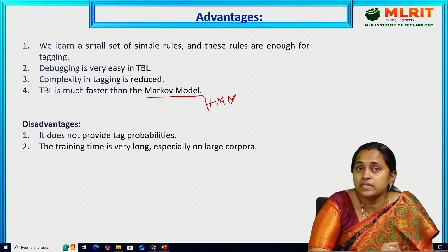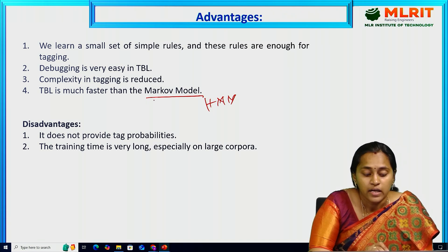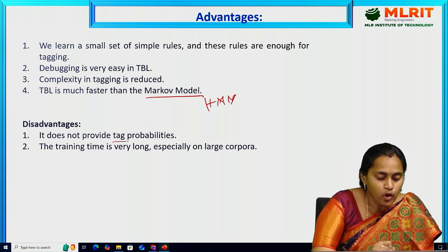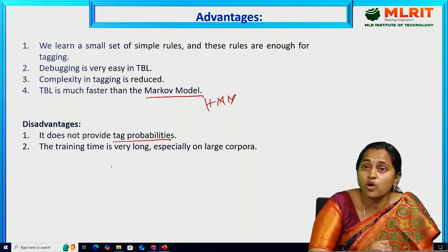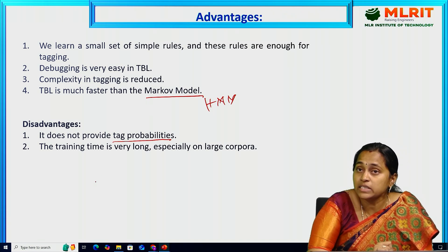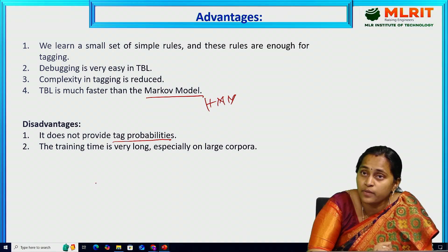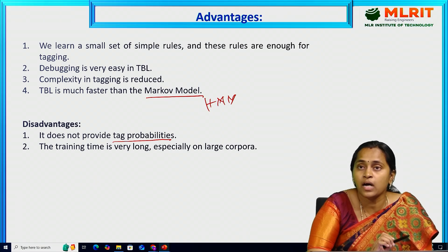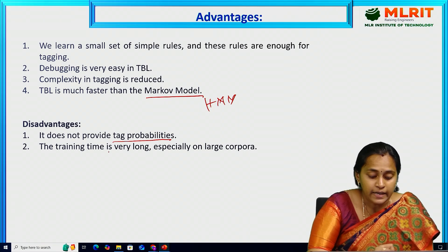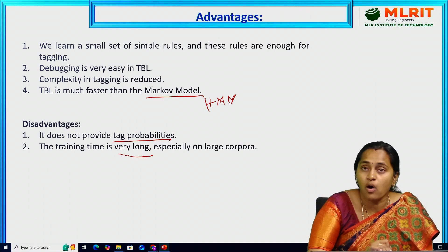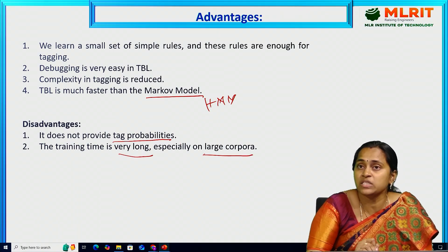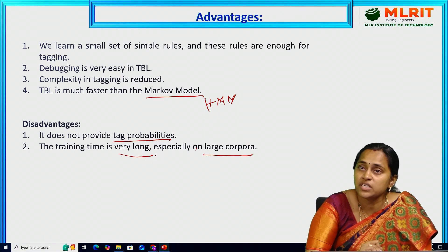The disadvantages: TBL does not provide tag probabilities, whereas HMM does provide tagging probabilities. Also, the training is very long, especially on large corpora, because it takes sufficient time to process.